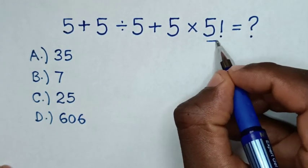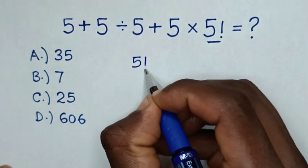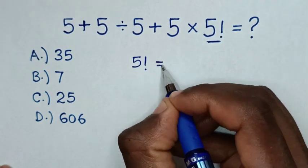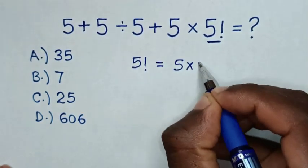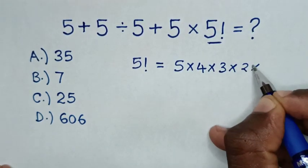So first, we'll deal with this factorial. So 5 factorial is same as multiplication from 5 to 1. So this is equal to 5 times 4 times 3 times 2 times 1.